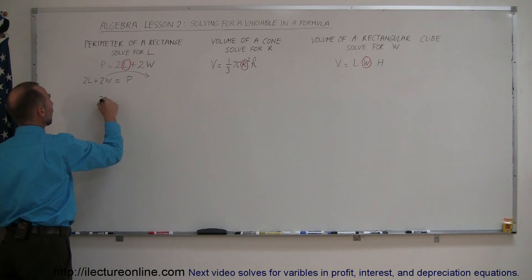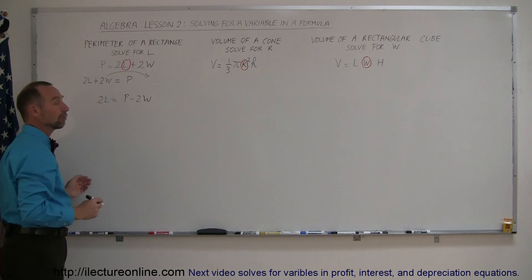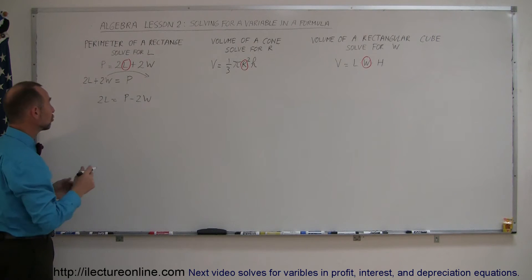And so we get 2L equals P minus 2W. Remember that whenever you cross the equal sign, you change the sign.